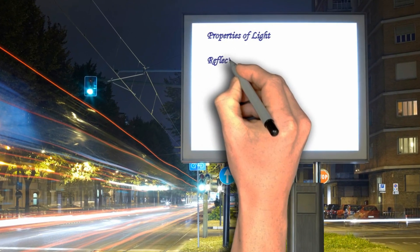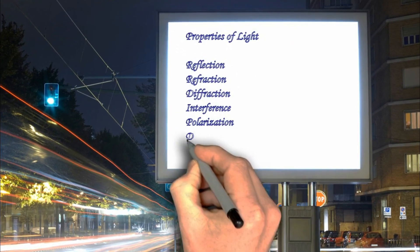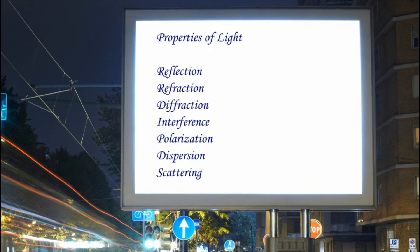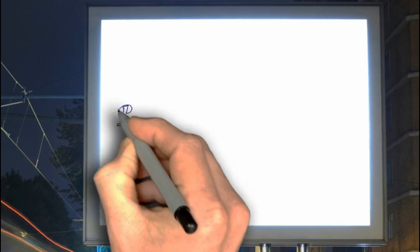Let's see the properties of light: reflection, refraction, diffraction, interference, polarization, dispersion, and scattering. We're going to go through reflection and refraction of light.